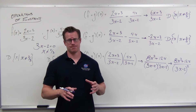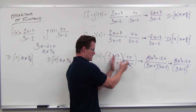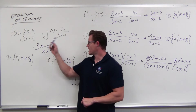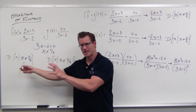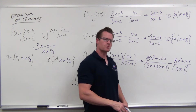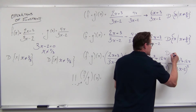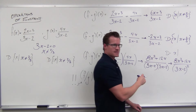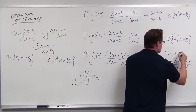You're going to see the same exact denominators that you had originally, so the same exact domain issues repeat. Our domain doesn't change. The domain for this is: x such that x cannot equal two-thirds.